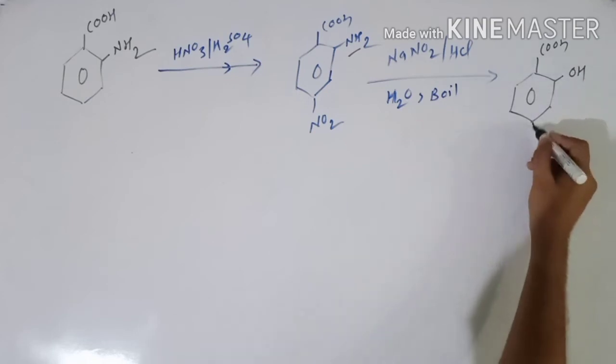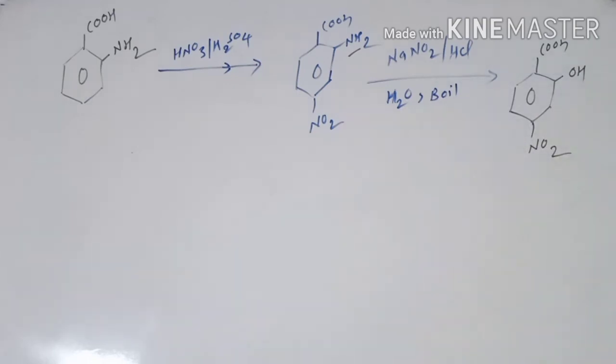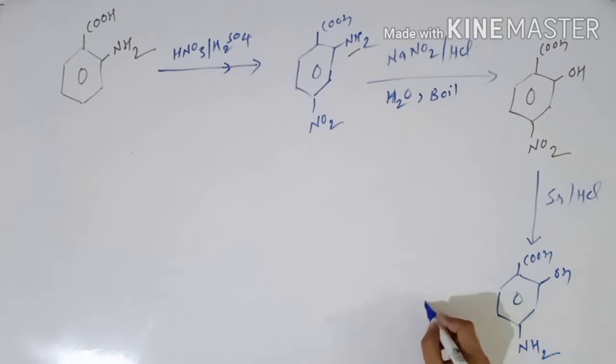Now it is quite simple how you will convert this compound to para-amino salicylic acid. Very simple, because we need to reduce this group. There are so many reducing agents available, so we will do reduction with Sn/HCl. What happens is this COOH group and OH remain, and this NO2 group is converted into NH2. This is your para-amino salicylic acid. In this way you can plan the synthesis of para-amino salicylic acid.